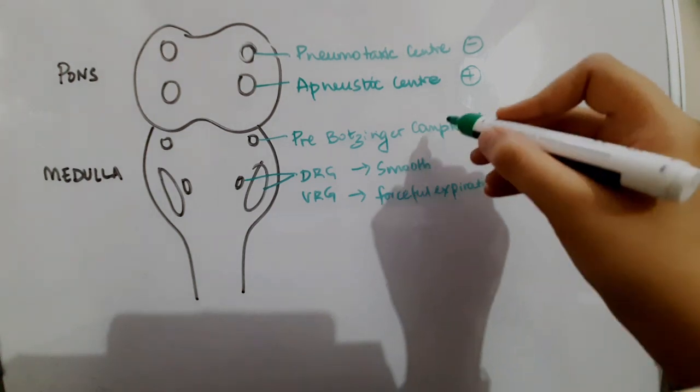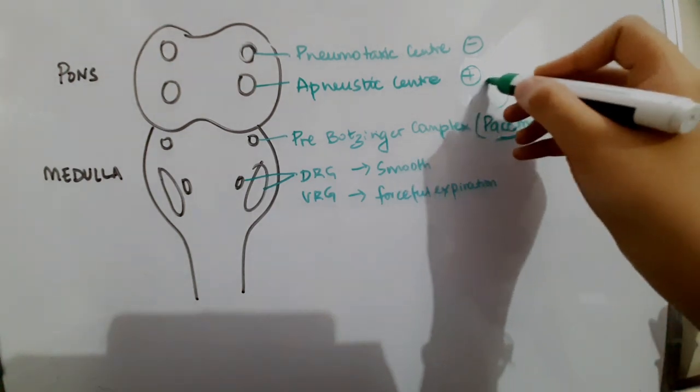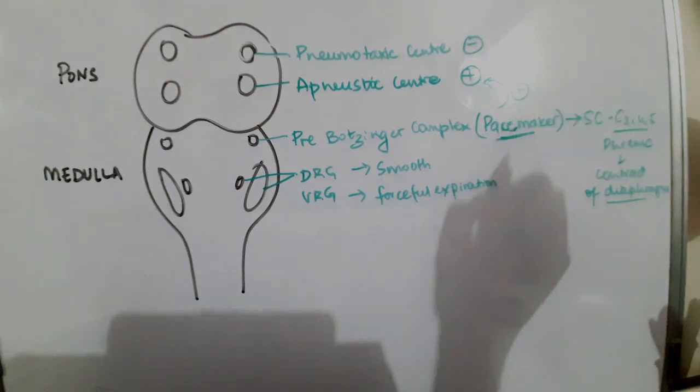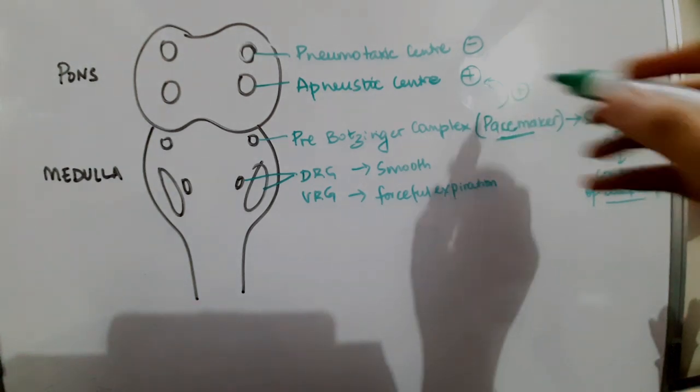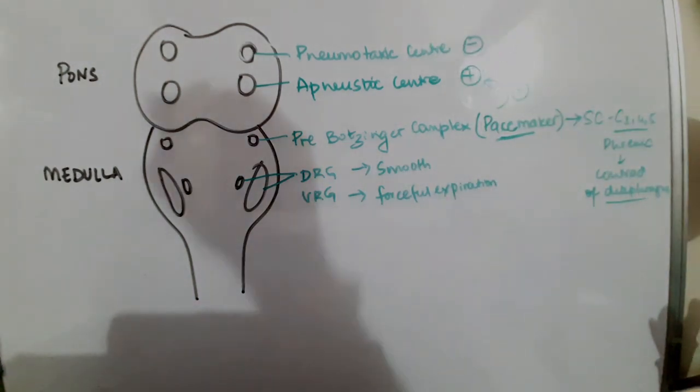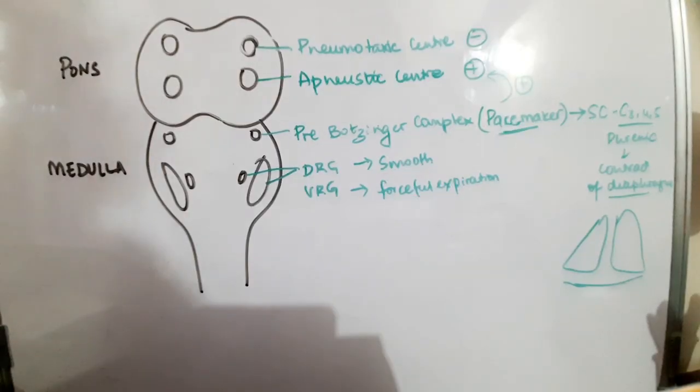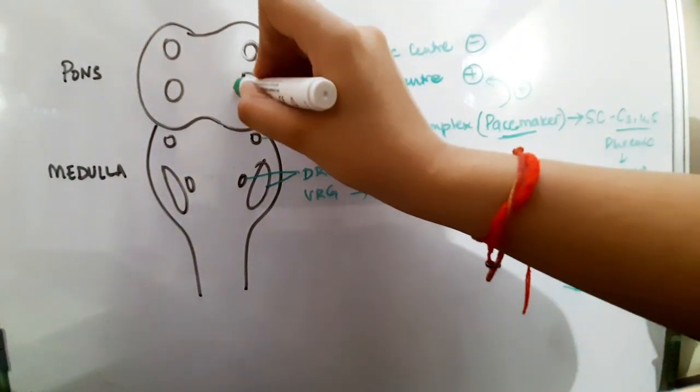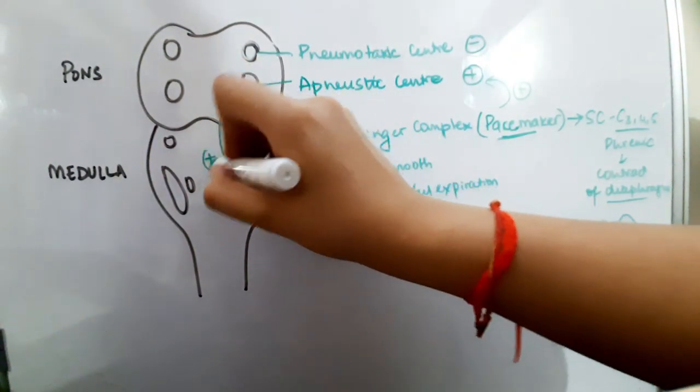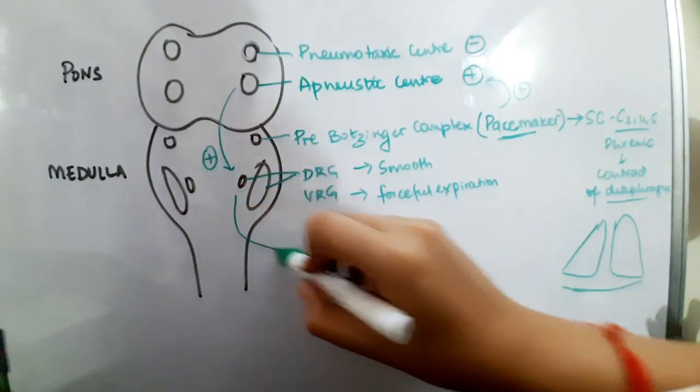The pre-bötzinger complex also stimulates the apneustic center in the pons, which stimulates respiration. The apneustic center then stimulates the dorsal respiratory group. This dorsal respiratory group is what makes the inspiration smooth.